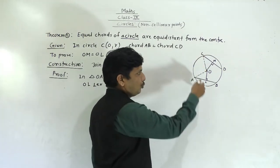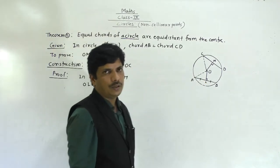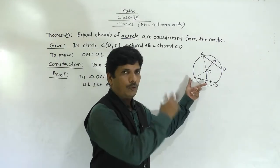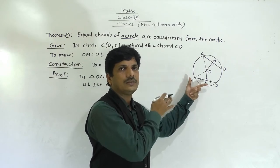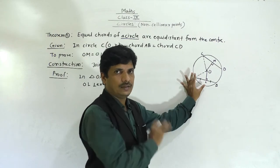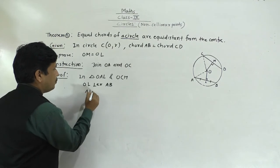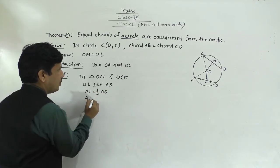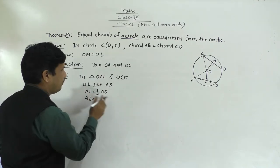Since the triangles are congruent, by CPCT, OM equals OL. That is our target — OM and OL are equal, proving that equal chords are equidistant from the center.